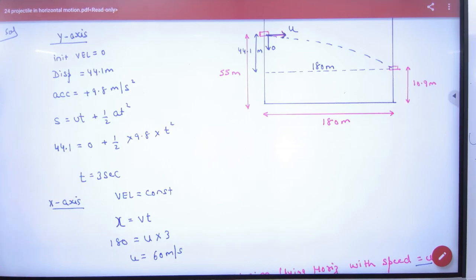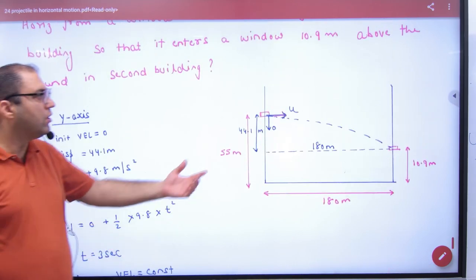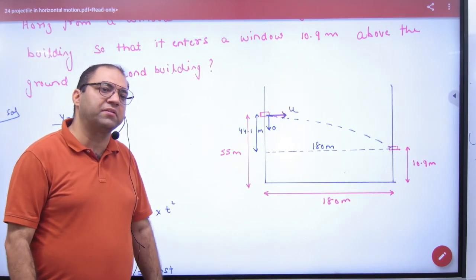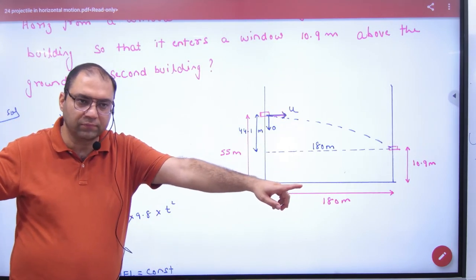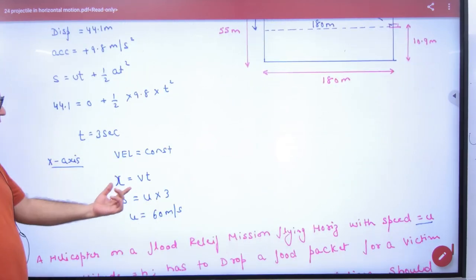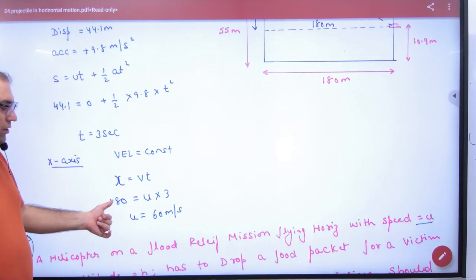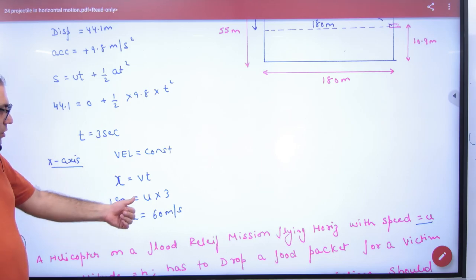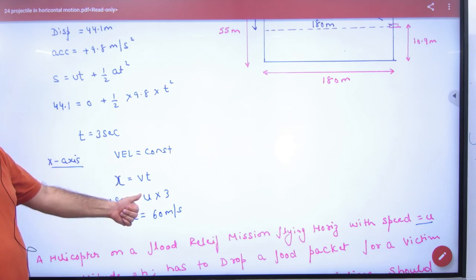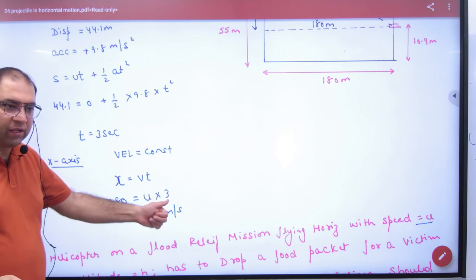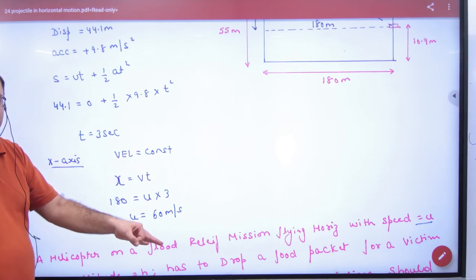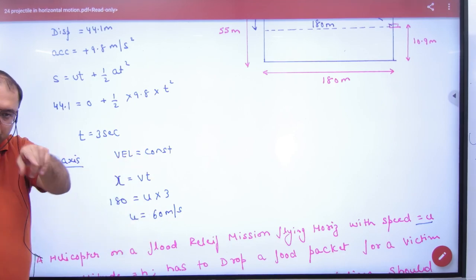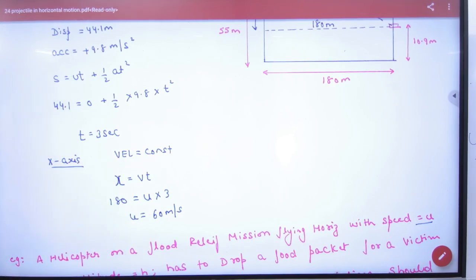Now using the x-axis: s = vt. The horizontal distance is 180 = U × 3. So U = 60 m/s. This is the same method as the previous problem — just explained differently. The vertical equation gives time, and the horizontal equation gives the initial speed.